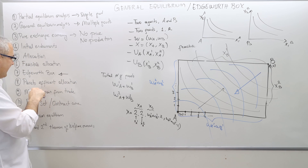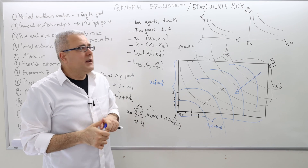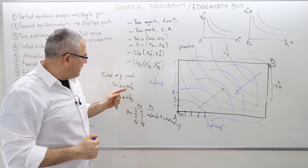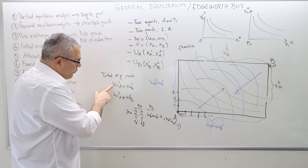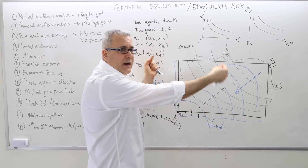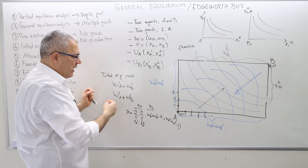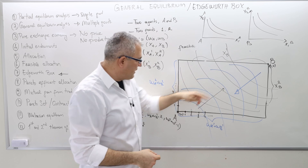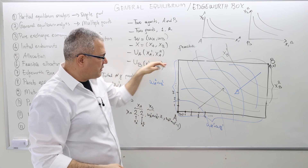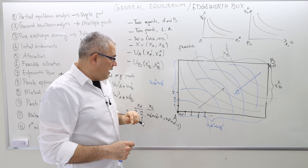To summarize: to draw the Edgeworth box, all you need are the initial endowments for good one and good two. Add them up to get the box dimensions. Place agent A at one corner and agent B at the opposite corner, then draw each agent's indifference curves given their utility functions. That's the Edgeworth box.